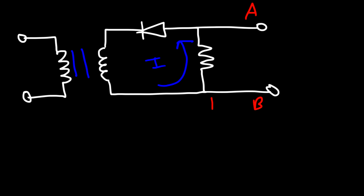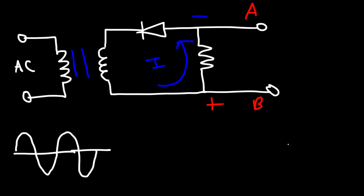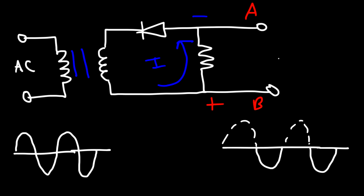So B is going to be more positive with respect to A. At the input, we still have our sine wave, but at the output, we're only going to have the bottom half of the sine wave. The top half will be eliminated, but we'll keep the bottom half. Thus, the output will look something like this. It's called the negative half-wave rectifier — we still have a pulsating DC signal, but the polarity has been reversed.